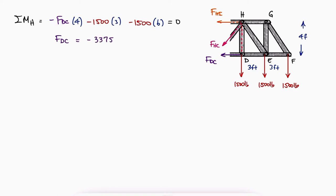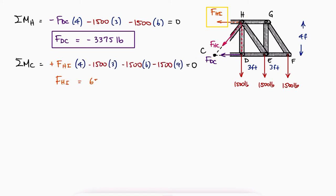With this, we can solve for FDC, a compressive force. Even though we don't see it in this section of the structure, point C makes sense for the next sum of moments. The lines of action of forces HC and FDC will pass through C, allowing us to solve for FHI.